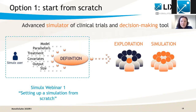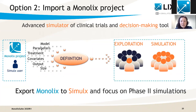In our first Simulix webinar, Geraldine showed you how to build a simulation from scratch — how to write a model and how to define different parameters used in a simulation scenario. Today, we are going to use a different option in which we use directly a Monolix project, and on this basis define explorations and simulations, focusing on simulations of the best dosing regimens for the phase two clinical trial.